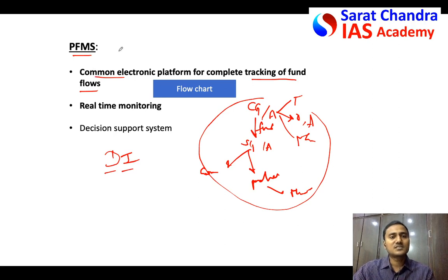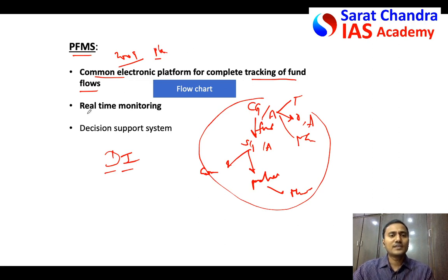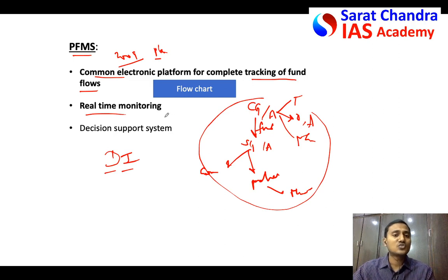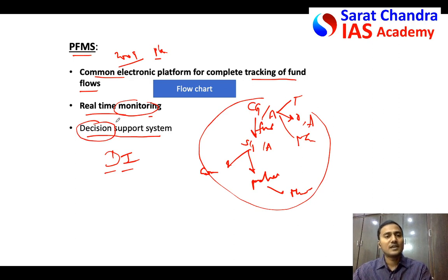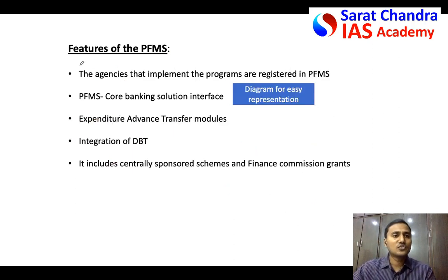As part of Digital India, PFMS was started in 2009, initially only for plan schemes — in those days plan and non-plan schemes were distinguished, but now there is no such distinction and PFMS is used for almost every scheme. It also helps in real-time monitoring of fund flows: which scheme funds are going to, how much is flowing, and how much is utilized. Because of this monitoring, different departments and ministries can take better decisions.